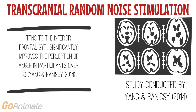With regard to the elderly, transcranial random noise stimulation has also been demonstrated to improve the perception of threat-based emotions, specifically in an older age demographic. When applied to the inferior frontal gyrus, a region implicated in emotion perception that decays with age, transcranial random noise stimulation has been demonstrated to significantly improve perception of anger in participants aged 60 and over, therefore serving a further survival function by allowing the perception of danger.